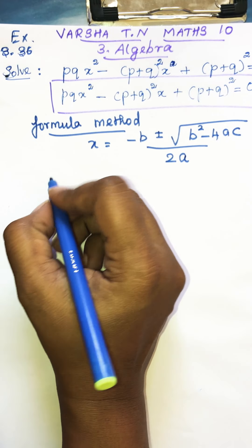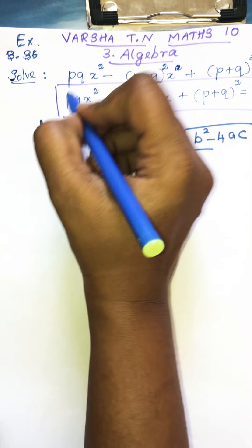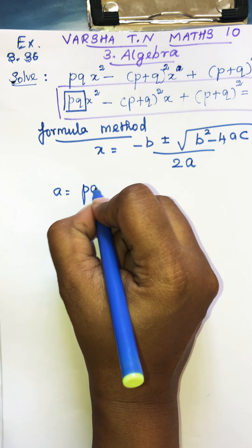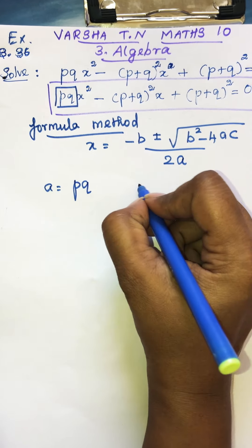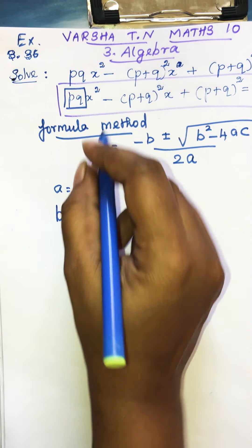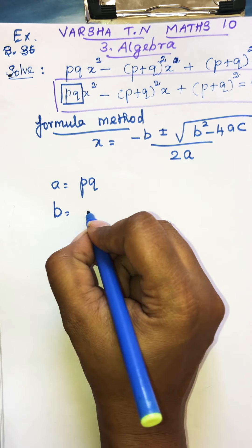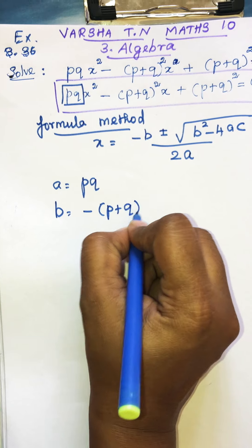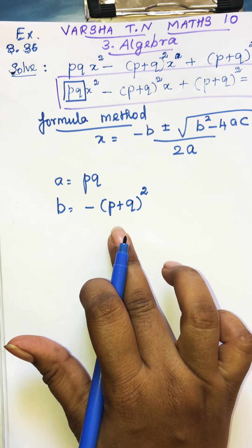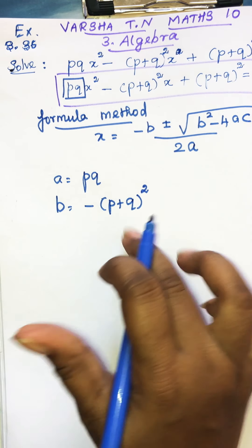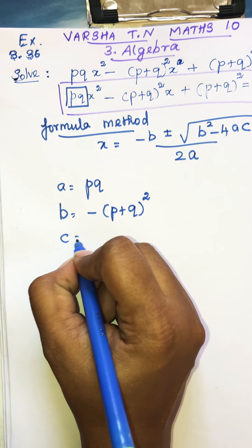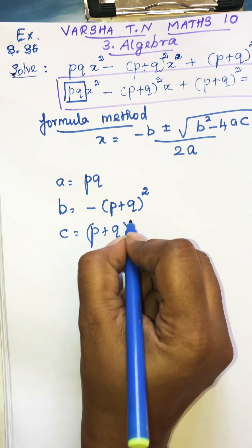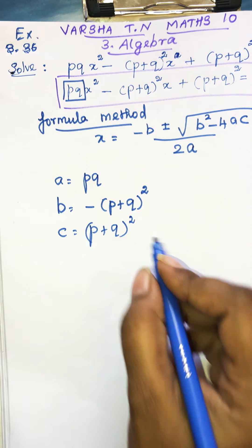Let us identify a, b, and c. What is a? a equals pq. What is b? b equals minus (p plus q)², so this is our b. What is c? c equals (p plus q)², so this is our c.